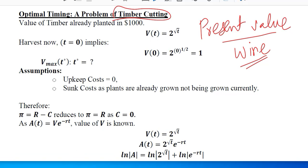The value of timber already planted is given by this equation. This is the value of the timber that is already there in the forest, and it can be assessed with the help of this equation in which the value V depends upon time, and this is the exact formula through which we can find it.